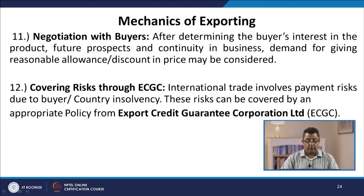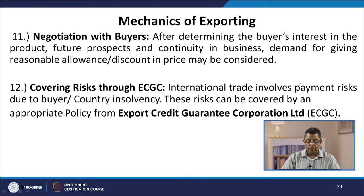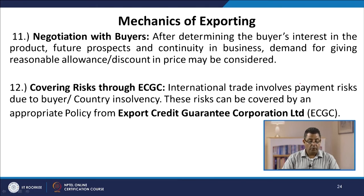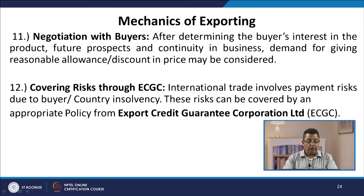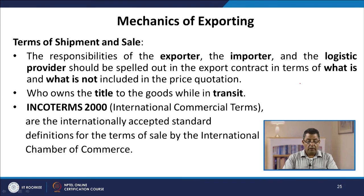The 12th step is covering risk through the ECGC — the Export Credit Guarantee Corporation. International trade involves payment risk due to buyer or country insolvency, and these risks can be covered by an appropriate policy from the ECGC. When the exporter and importer are negotiating, they also come across various terms of shipment and sales. The responsibility of the exporter, importer, and logistics provider should be spelled out in the export contract in terms of what is and is not included in price quotations, and who holds title to goods while they are in transit.